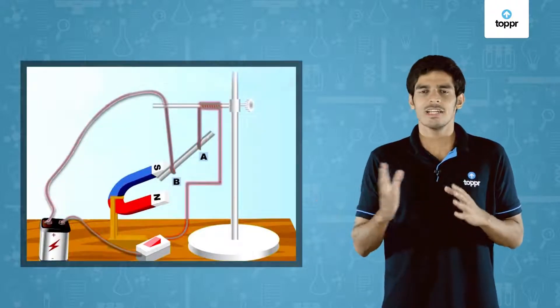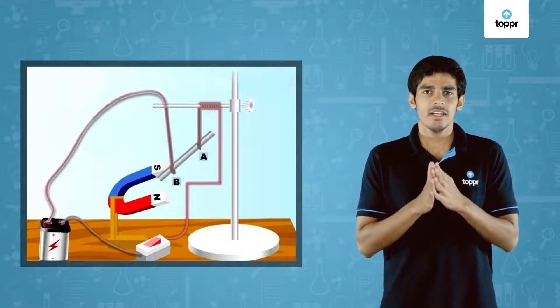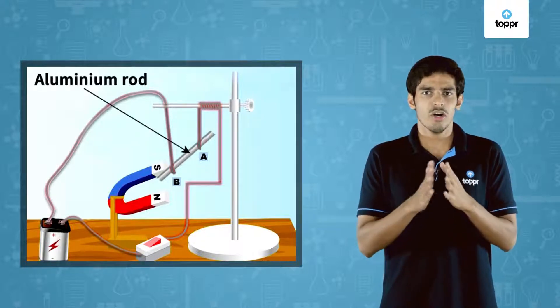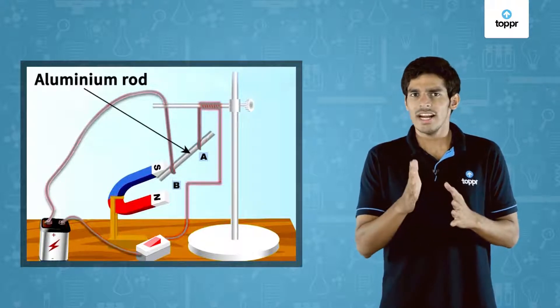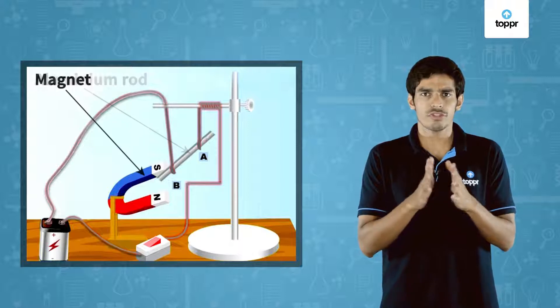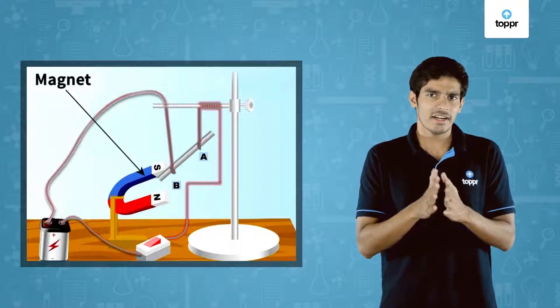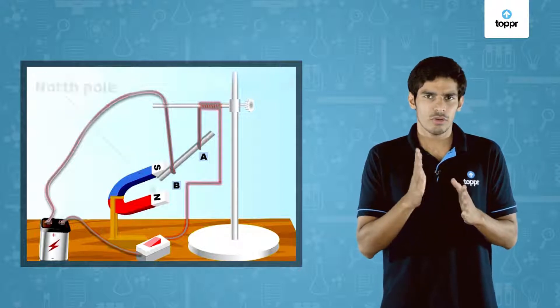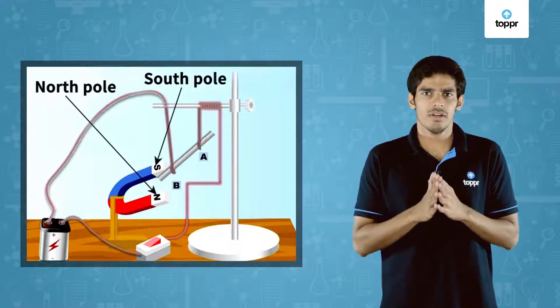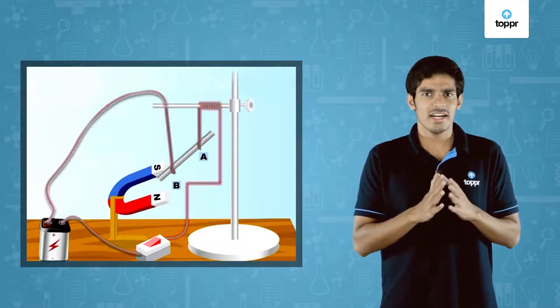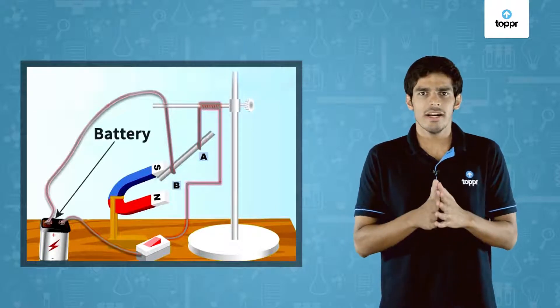Consider the experimental setup shown. In this setup the aluminium rod is suspended horizontally from a stand and it is placed between the poles of a strong horseshoe magnet. Also the field is directed upwards, that is from the north pole to the south pole. Further, this rod is connected in series with the key and a battery.